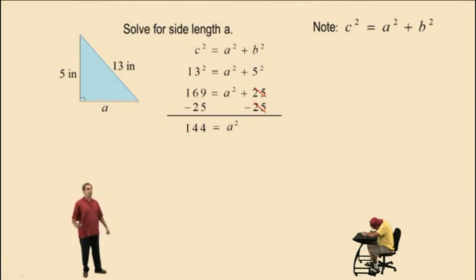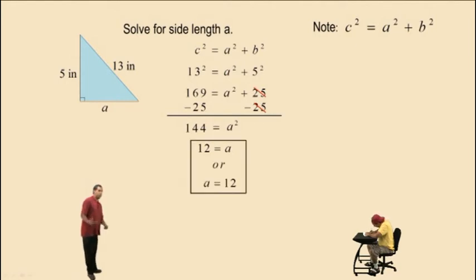So what number do you square to get 144, Charlie? 12. That's right. So you can take the square roots of both sides, and you would get 12 equals a. And that's the same as a equals 12. So that's one way of doing it.